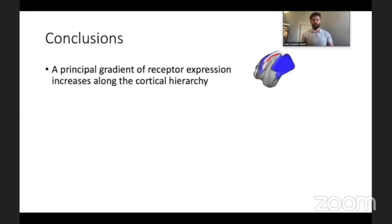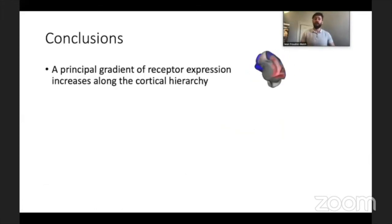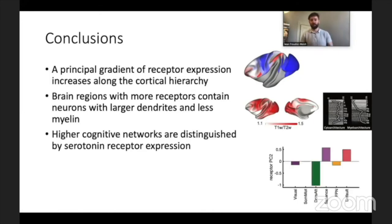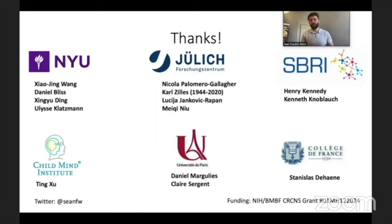To conclude: we found a principal gradient of receptor expression that increases along the cortical hierarchy. Brain regions with more receptors tend to contain neurons with larger dendrites and less myelin. We also found that higher cognitive networks are distinguished by the pattern of serotonin 5HT1A receptor expression. Thank you very much for listening, and thank you to the organizers of this workshop.